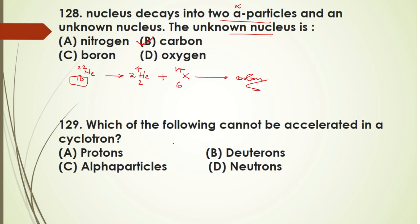Question 129: which of the following cannot be accelerated in a cyclotron? Low-mass charged particles and electrons can be accelerated. However, neutral particles cannot be accelerated because the magnetic force requires a charge. Neutrons are neutral and have no charge, so they cannot be accelerated. The answer to question 129 is D.